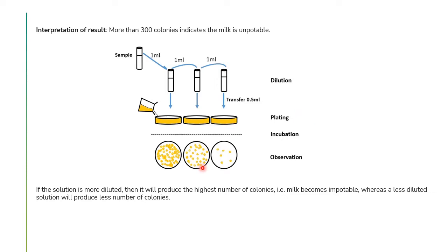Interpretation of results: more than 300 colonies indicates that milk is unpotable. If the milk sample is more diluted and still produces a high number of colonies, it means the milk is unpotable. Less diluted solutions will produce fewer colonies.